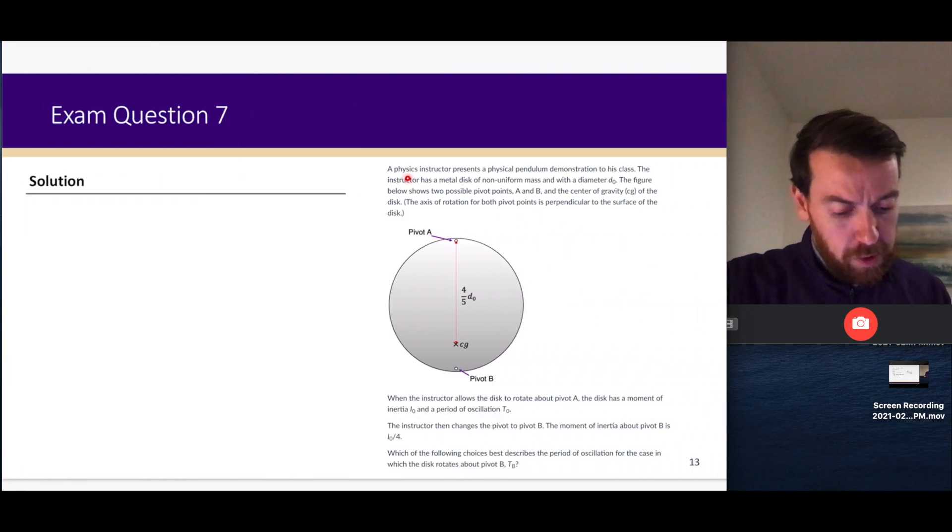A physics instructor presents a physical pendulum demonstration to his class. The instructor has a metal disc of non-uniform mass. I put that in there because I didn't want the center of gravity to be at the center—I wanted a non-uniform disc to move the center of gravity away from the center of the disc.